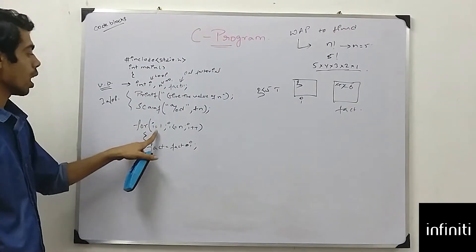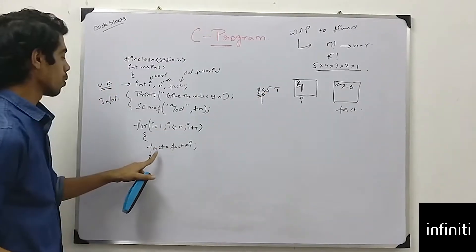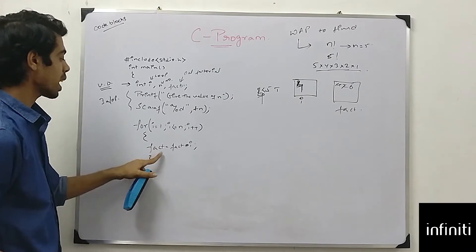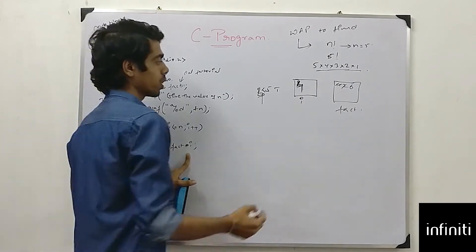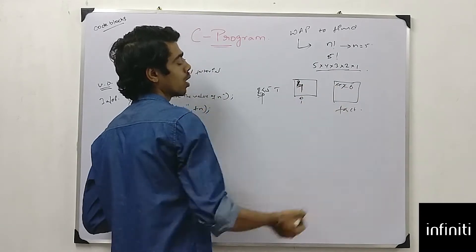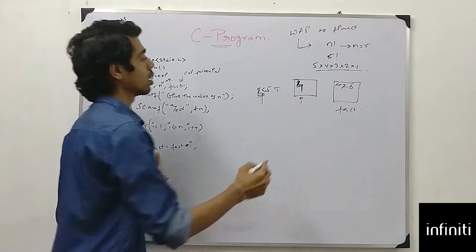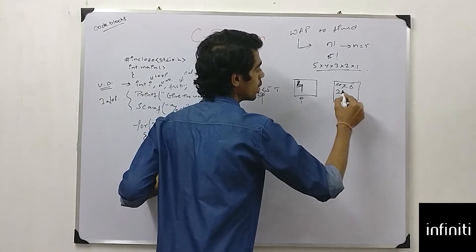Again, i is equal to 4. Now i is equal to 4. It will get inside the loop. Fact is equal to fact into i. What is fact? Fact is 6. What is i? i is 4. 6 into 4 which is 24. And 24 will be stored inside fact. So the answer will be 24.